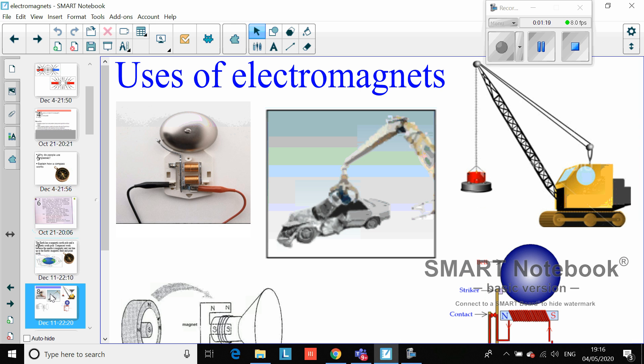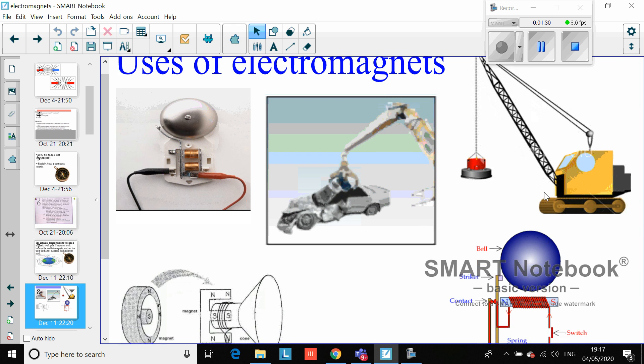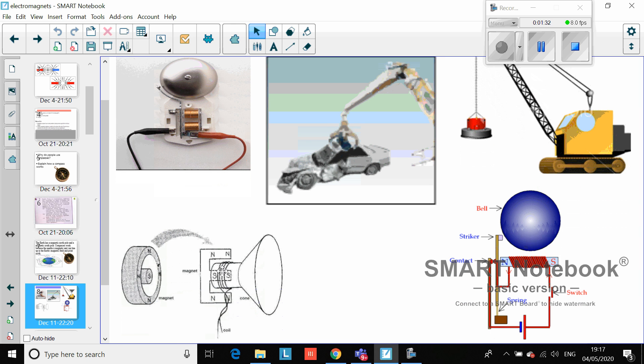We use electromagnets all over the place. A school bell uses an electromagnet, a dumpyard crane uses an electromagnet, and speakers use an electromagnet. Can you pause the video and write down those uses, then quickly jump on the internet and look up any other uses of electromagnets.